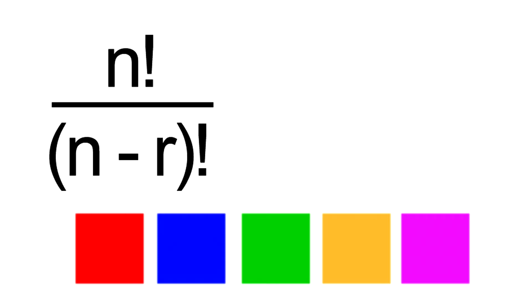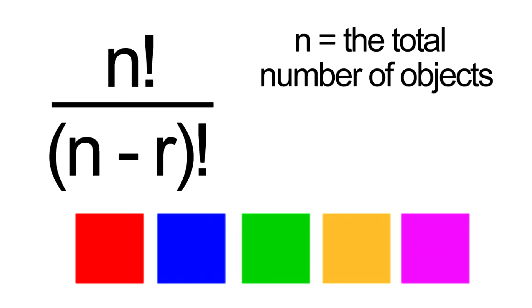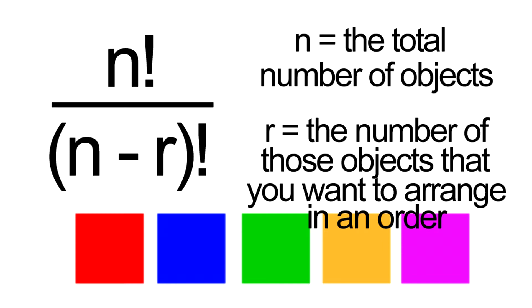Remember the formula for permutations is n factorial divided by n minus r factorial, where n is the total number of objects and r is the number of those objects that you want to arrange in an order.